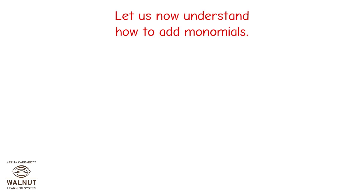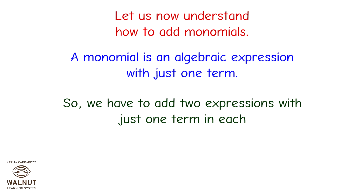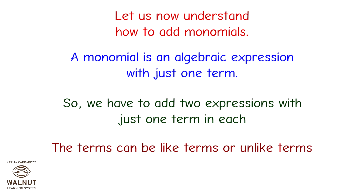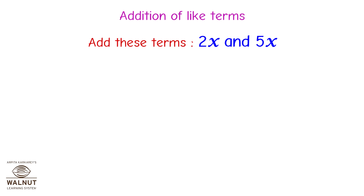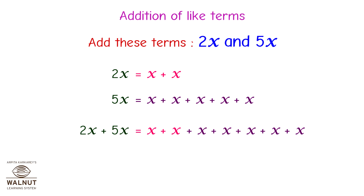Let us now understand how to add monomials. A monomial is an algebraic expression with just one term, so we have to add two expressions with just one term in each. The terms can be like terms or unlike terms. Let us learn the addition of like terms. Let us add 2x and 5x. Are these like terms? Yes.